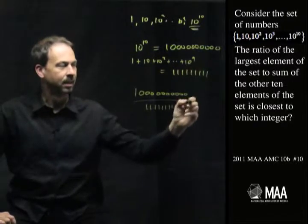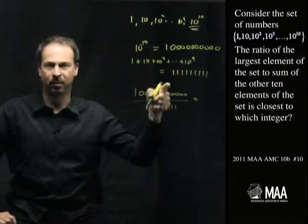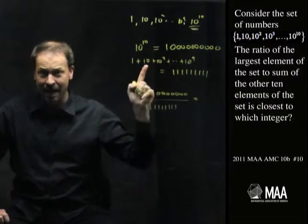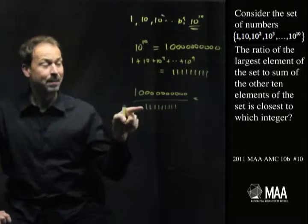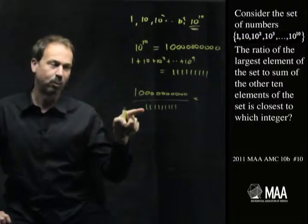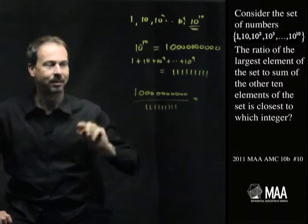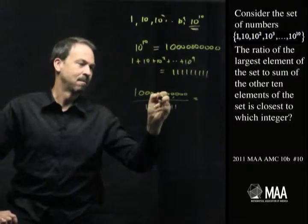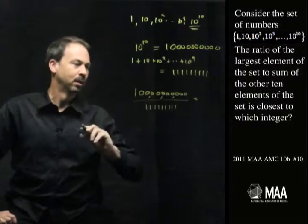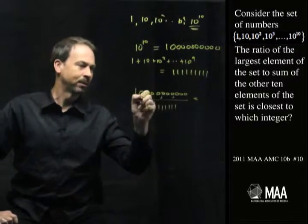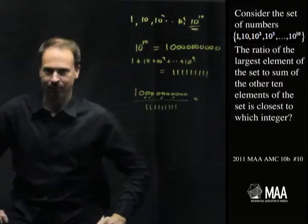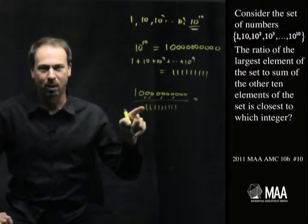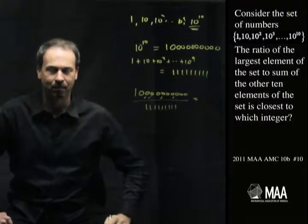So the question is, I bet that's not a perfect integer, but it's probably really close to one. So I'm going to ask now, how many multiples of 1,111,111,111 sit near 10 billion? How many multiples of 1,111,111,111 go into 10 billion?